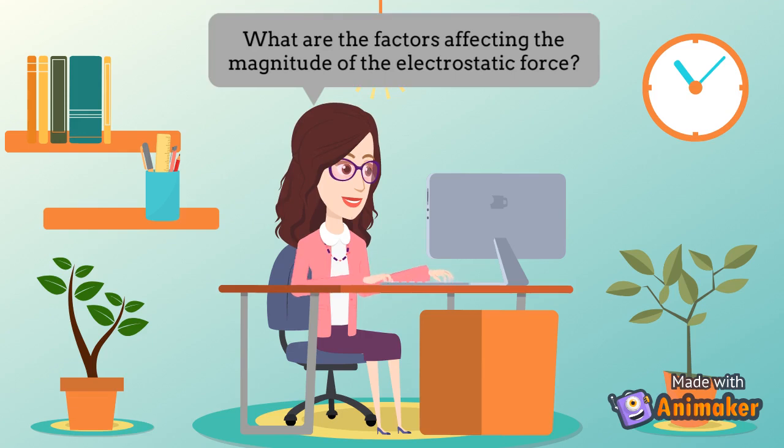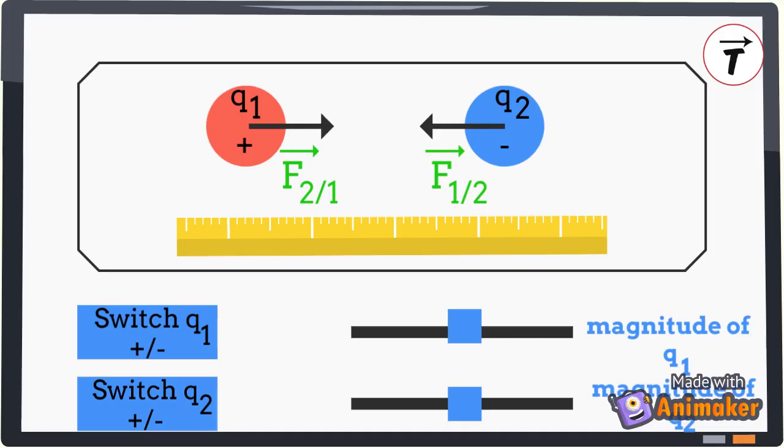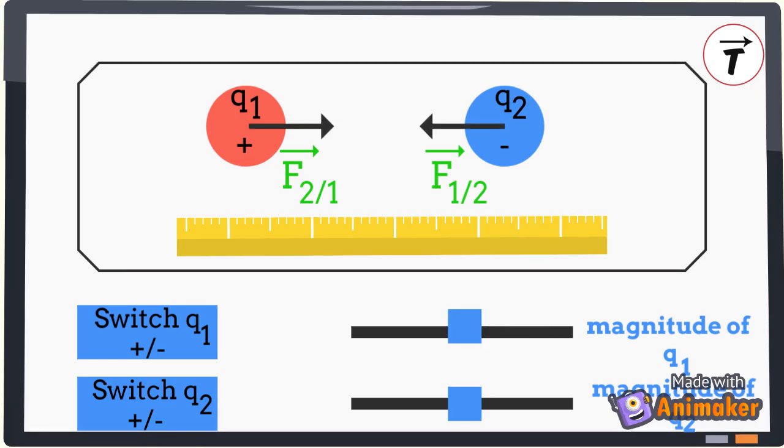What are the factors affecting the magnitude of the interaction between the two particles? This is a force between two charged particles, so as the magnitude of any of the two charges increases, the magnitude of the force increases as well.